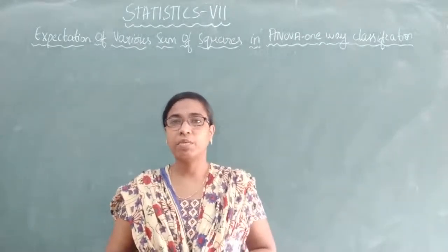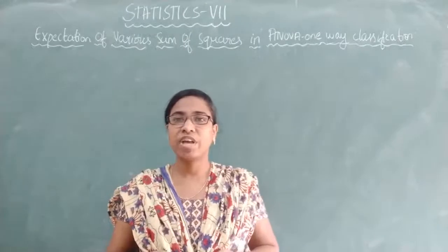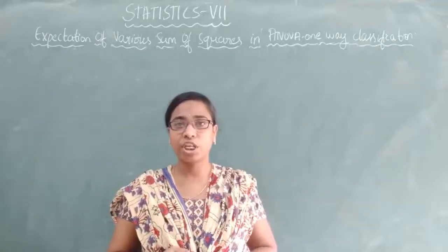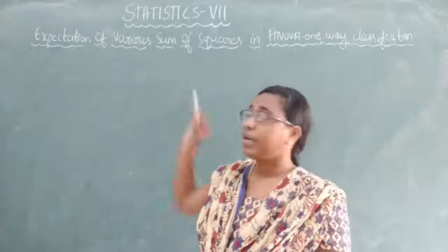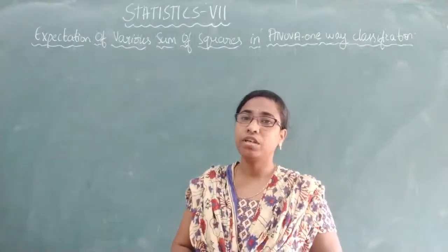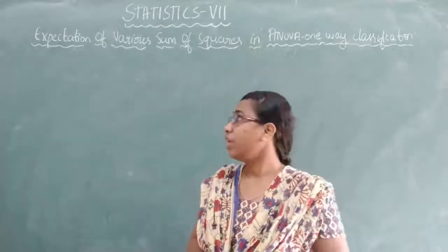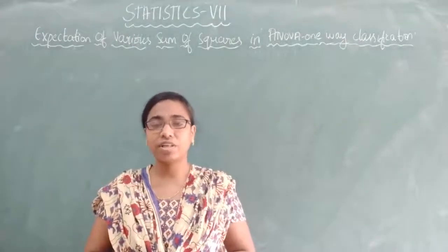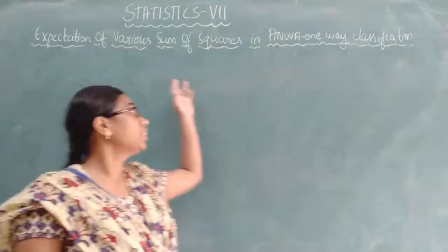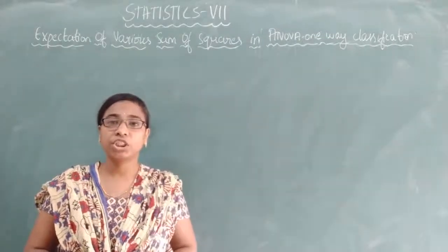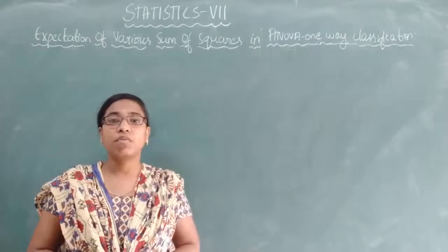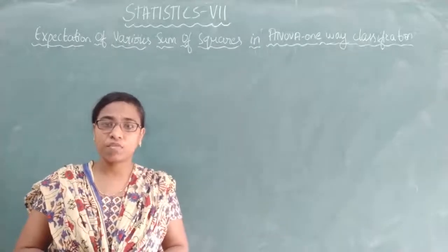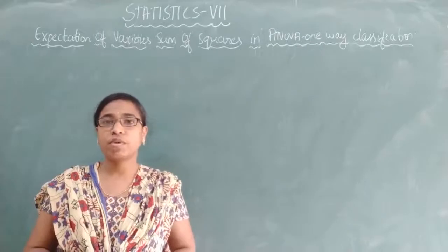Good morning students, welcome to the next class. In the last class we discussed some simplified formulas to solve the practical problems of the ANOVA one-way classification, and we started to find the expectation for the various sum of squares in ANOVA one-way classification. We are going to find the expectation for the sum of squares to obtain the appropriate test statistic. The total sum of squares is partitioned into sum of squares due to treatment and sum of squares due to error, and we will be finding the expectation of sum of squares due to error.